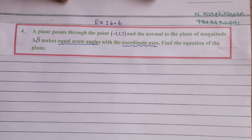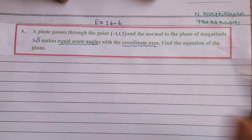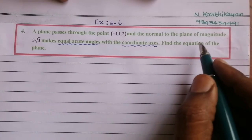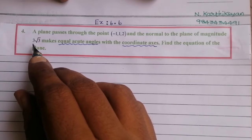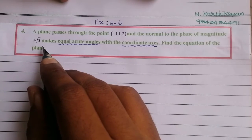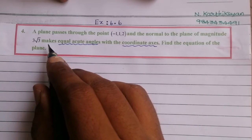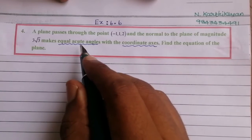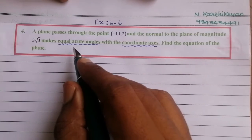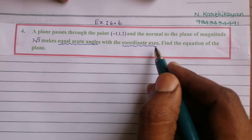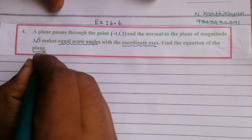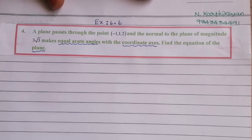A plane passes through the point. A normal to the plane of magnitude 3√3 makes equal acute angles with the coordinate axes. Find the equation of the plane.